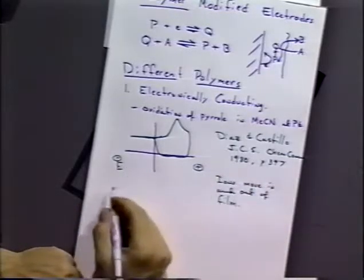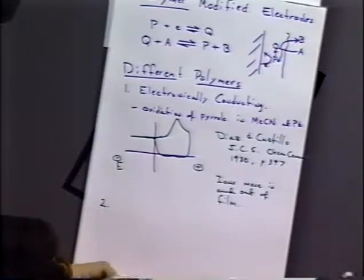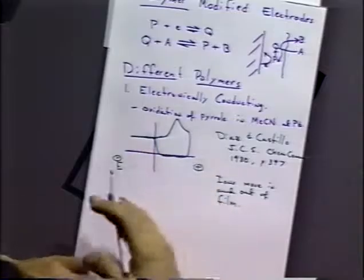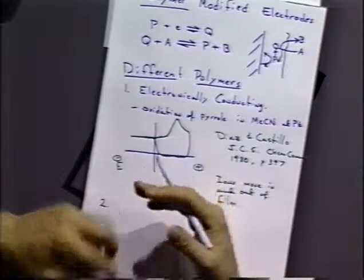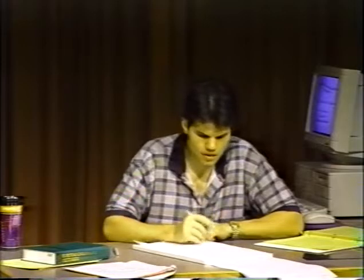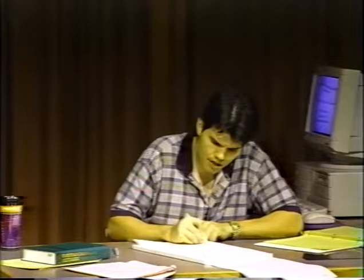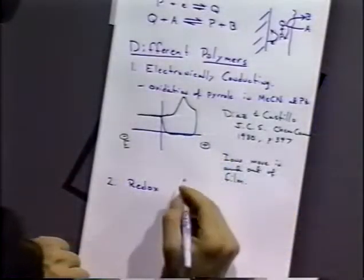These conducting polymers could be thought of as new types of metal or new types of electrodes. Sometimes reactions work better on certain types of electrodes than others, so these could serve as a different sort of electrode material you can do experiments on.